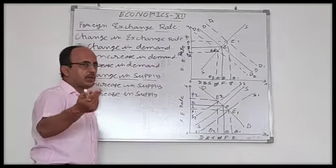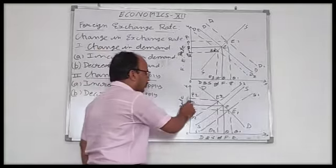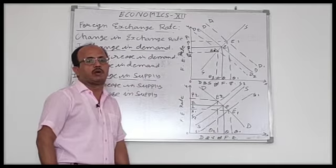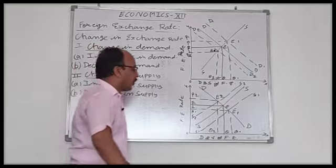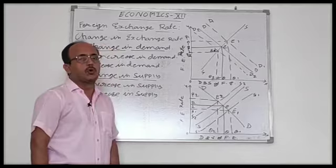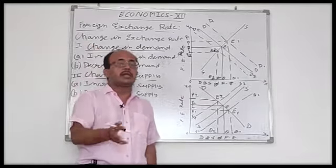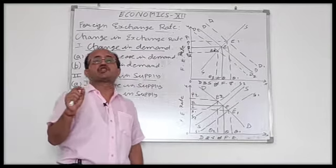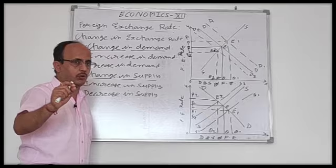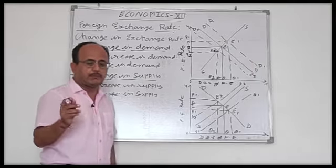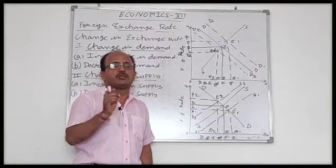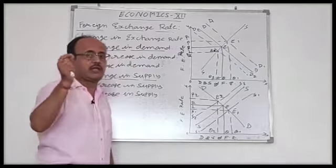Now at E2 point, the foreign exchange rate increases to OR2 and the quantity is reduced to OQ2. This shows appreciation of the foreign currency dollar and depreciation of the domestic currency rupee — the dollar has become more valuable, so more rupees are needed to buy it.